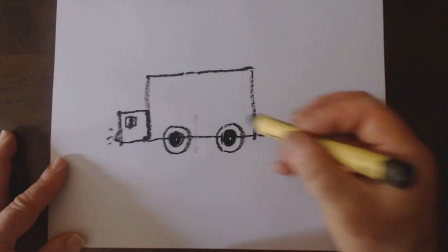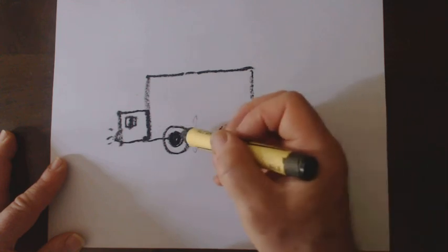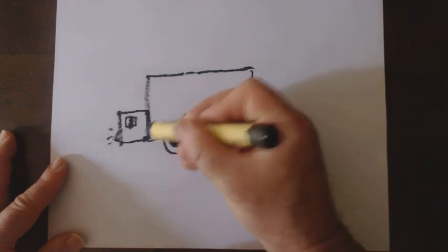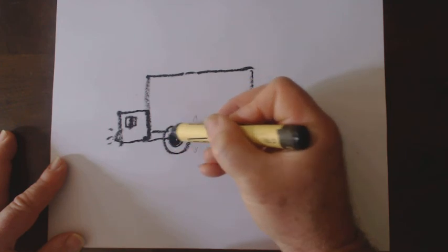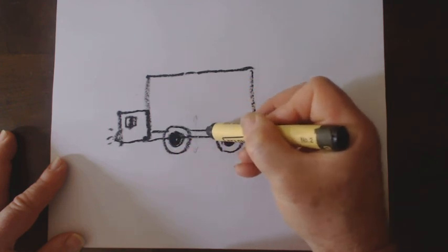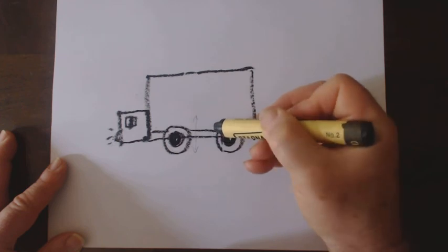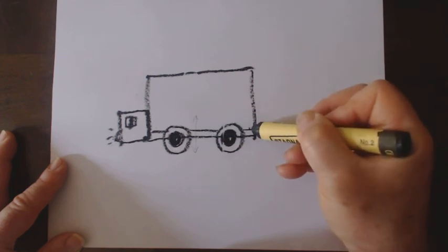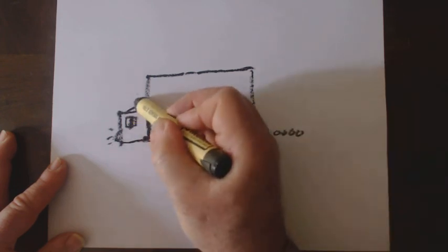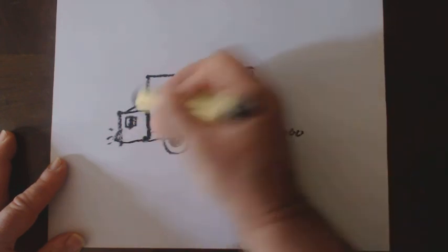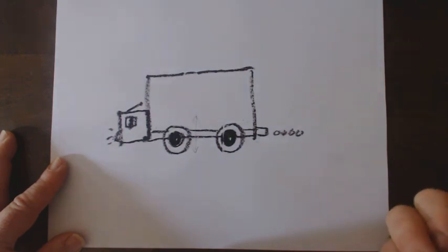I'm going to add some details on the truck to make it look nice. I'll add a line down here, stopping when I hit the wheel, skipping over the wheel, and continuing on the other side. Next, I'm going to make a little diagonal line for the antenna so the truck driver can listen to the radio and have some nice music and news while they're traveling.